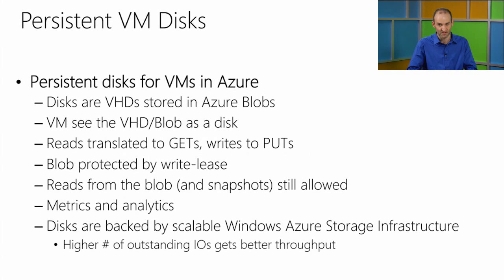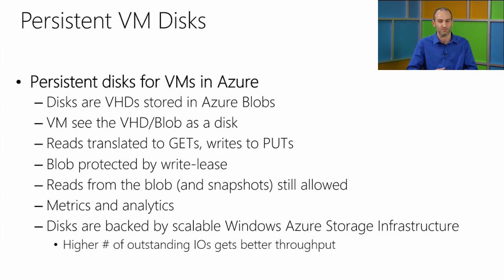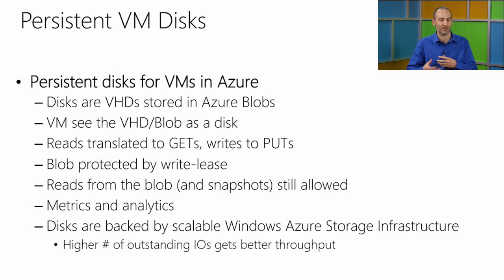We also have persistent virtual machine disks for the Windows Azure IaaS service. When you create a persistent VM, your disks are stored in Windows Azure storage. Internally within the storage system they're just a regular blob, and the file format is a VHD. When your VM does an IO operation like a read, it's automatically translated into a REST GET, and a write gets translated into a REST PUT. We protect these blobs with a write-only lease to prevent corruption, but you can also read from the blob while the VM is writing to it, or take snapshots of a running VM.